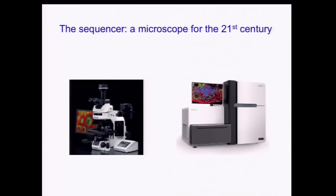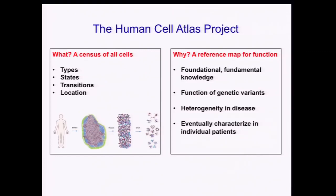This all suggests that the sequencer may very well become the microscope for the 21st century. What I want to do in my remaining five minutes is suggest how we can put this microscope to very good use in order to build a Human Cell Atlas that gives us all of the types, states, transitions, and locations of cells.